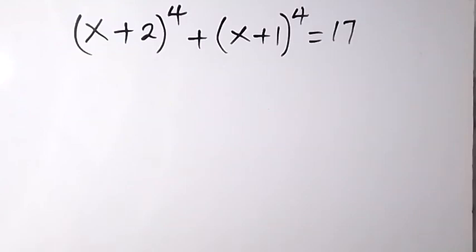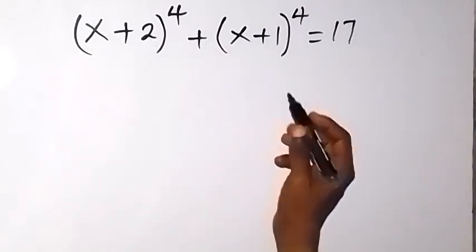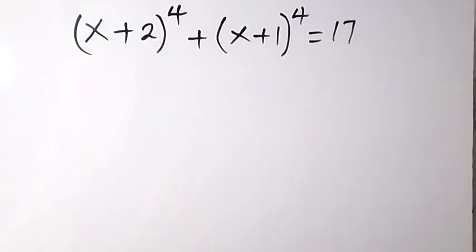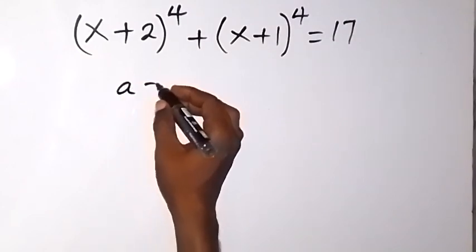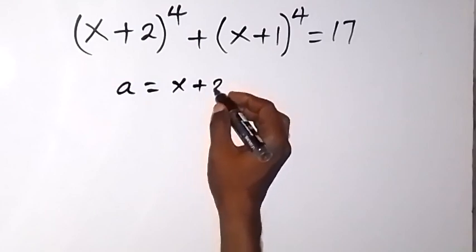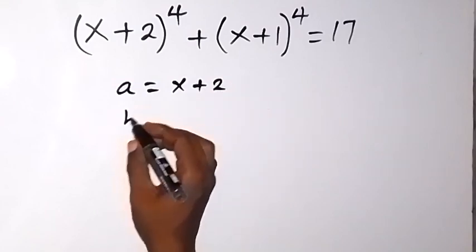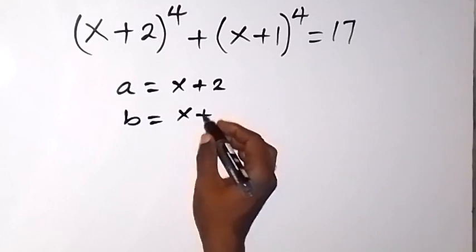Welcome to this class. We want to solve this problem: finding the value of x in (x+2)⁴ + (x+1)⁴ = 17. Let's make a equal to x+2 and b equal to x+1.